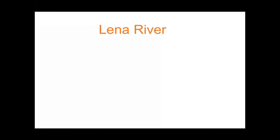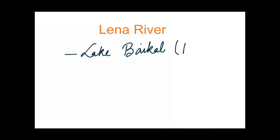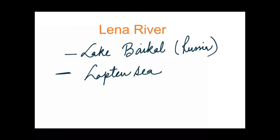Now let us learn about the Lena River, and then we will cover the Verkhoyansk Ranges. The Lena River originates from a lake called Lake Baikal, which lies completely in Russia. The Lena River flows northward and flows into the Laptev Sea — which we covered in the first or second part of the Asian continent series. It creates a delta there. To the right of Lena River lie the Verkhoyansk Mountains. Both Lena River and Verkhoyansk Mountains cut across 66.5 degrees north, that is the Arctic Circle.